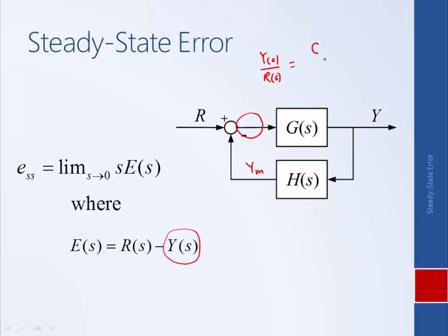Where the forward path is G divided by 1 plus loop, where the feedback path is G times H. And so in order to calculate the output Y(s), we simply take our transfer function and multiply R(s) to the right-hand side.